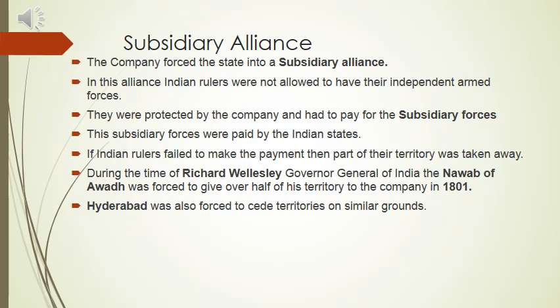During the time of Richard Wellesley, who was the Governor General of India, the Nawab of Avadh was forced to give over half of his territory to the company in 1801 because the subsidiary alliance was imposed on him — the company said he was not paying, so half his territory would be taken. Hyderabad was another state forced to accept the company's demands and its territory was also taken. So the Nawab of Avadh and Hyderabad are the two states whose territory was taken by the company.